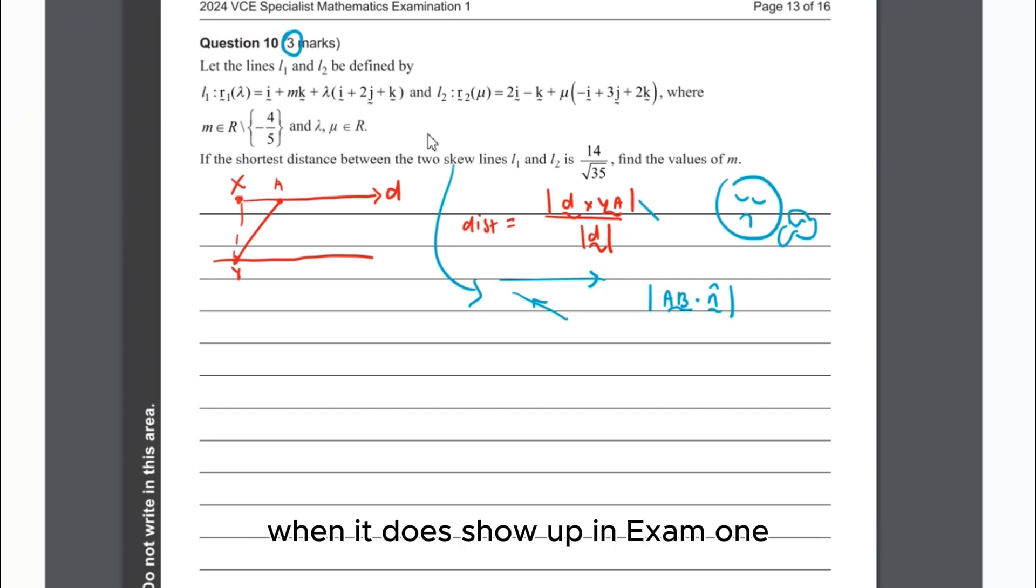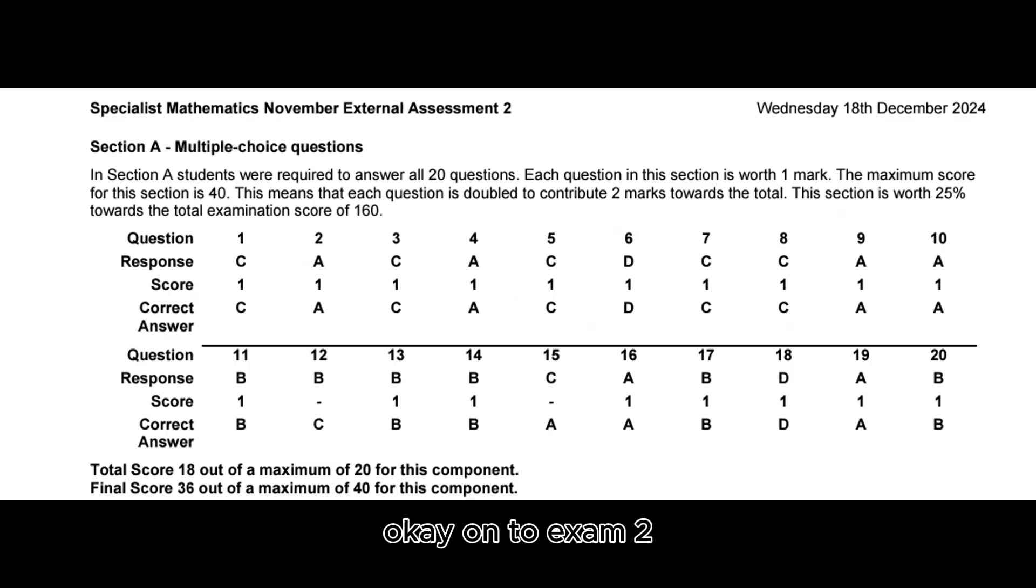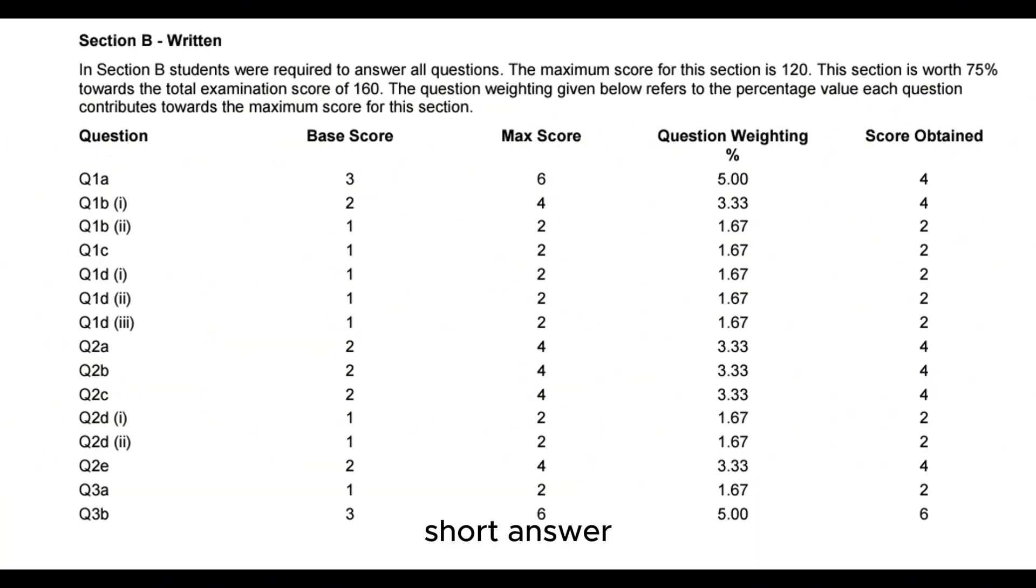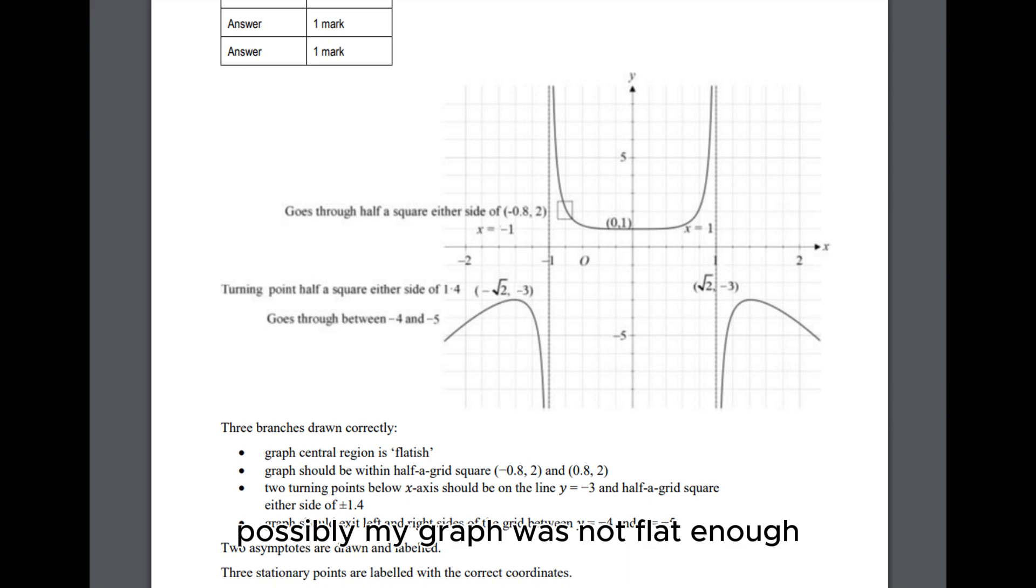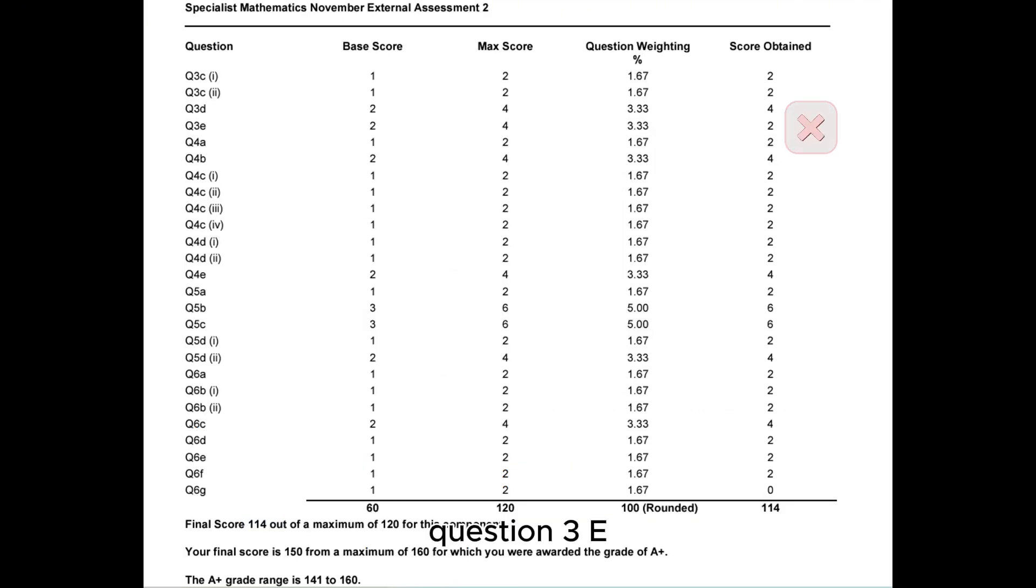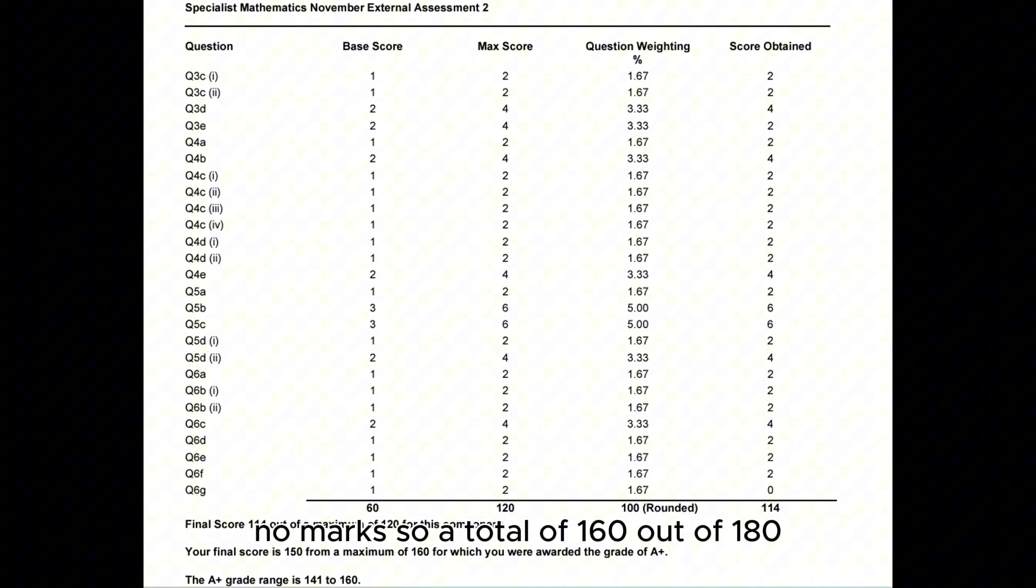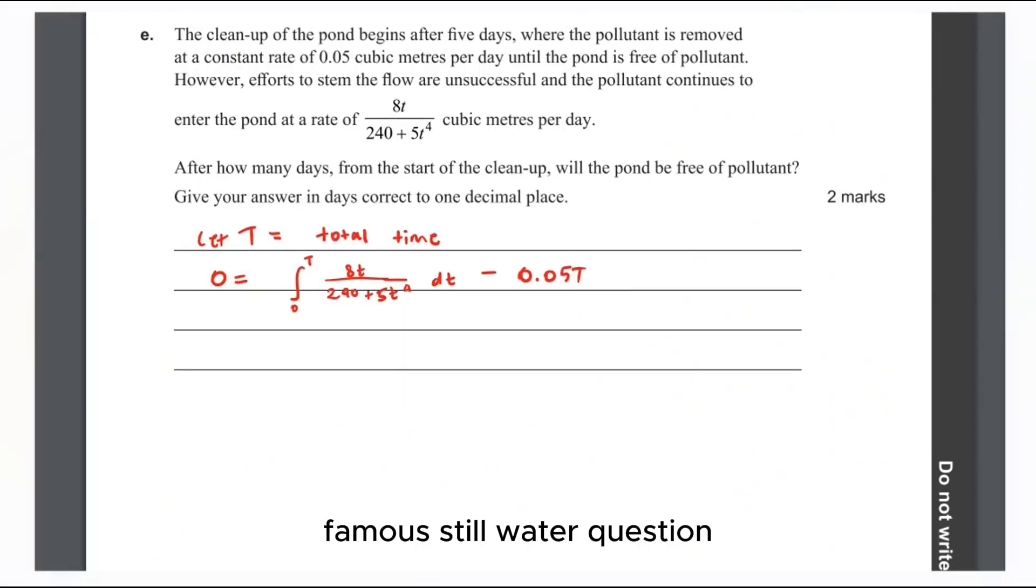On to Exam 2. For multiple choice, it was 18 out of 20 correct. Short answer, there was a total of three questions that I did not score full marks on. Question 1a I lost a mark there, possibly my graph was not flat enough. Question 3e, one mark loss. Final question, no marks. So a total of 160 out of 180.